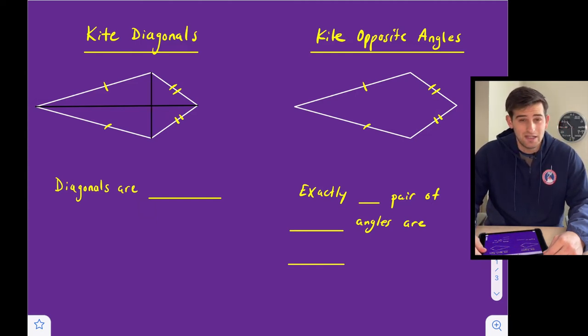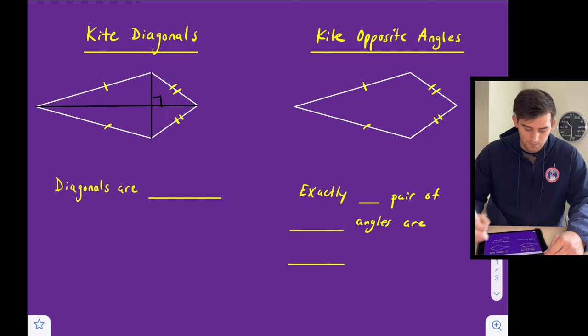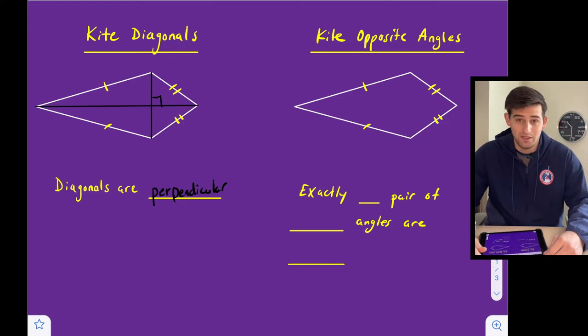So looking at those two diagonals, it looks like a 90 degree angle, right? And that's because it is. So these two diagonals intersect to form a 90 degree angle. We would say that their diagonals are perpendicular. Kite diagonals are perpendicular.